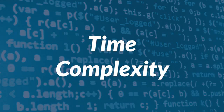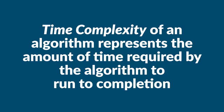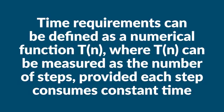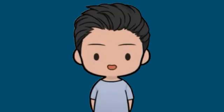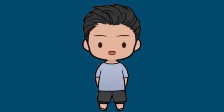We also have time complexity. Time complexity of an algorithm represents the amount of time required by the algorithm to run to completion. Time requirements can be defined as a numerical function T(n), where T(n) can be measured as the number of steps, provided each step consumes constant time. For example, addition of two n-bit integers takes n steps. Consequently, the total computational time is T(n) = c × n, where c is the time taken for the addition of two bits. Here, T(n) grows linearly as the input size increases.